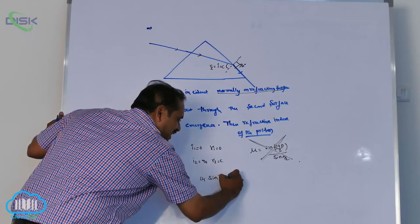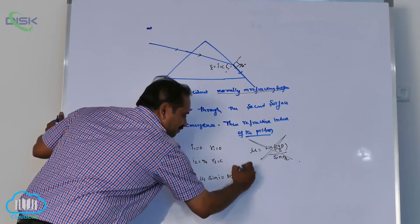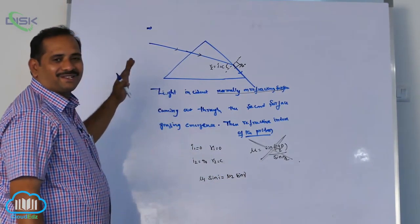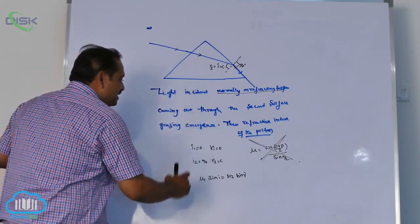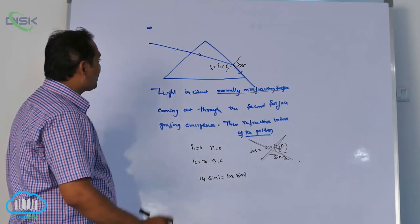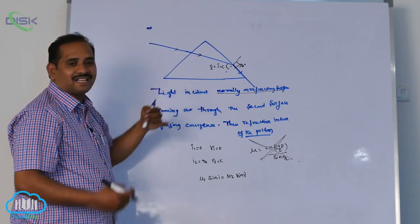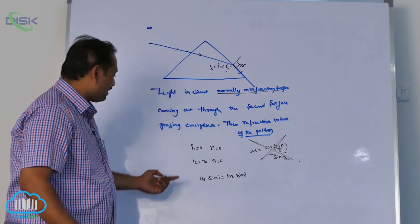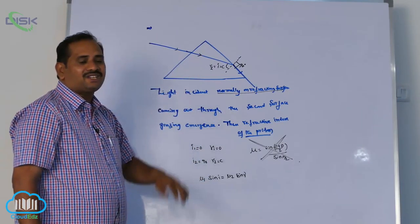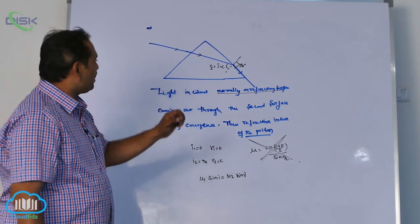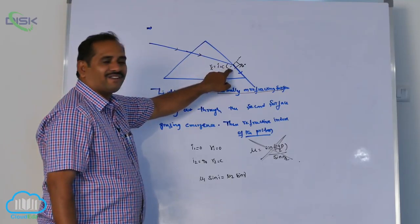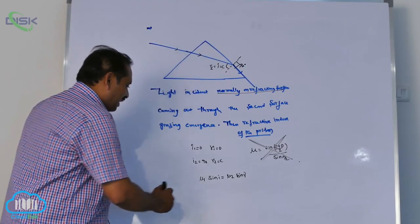But which one is applicable to solve this problem? Snell's law. μ1 sin i equal to μ2 sin r. That only the basic rule. So μ1 sin i equal to μ2 sin r. One more condition - you observed or not, at first refracting surface I don't have right to apply the condition like that. Why? Because sin 0 by sin 0 undefined. I can apply only one condition, sir, that is at second refracting surface.